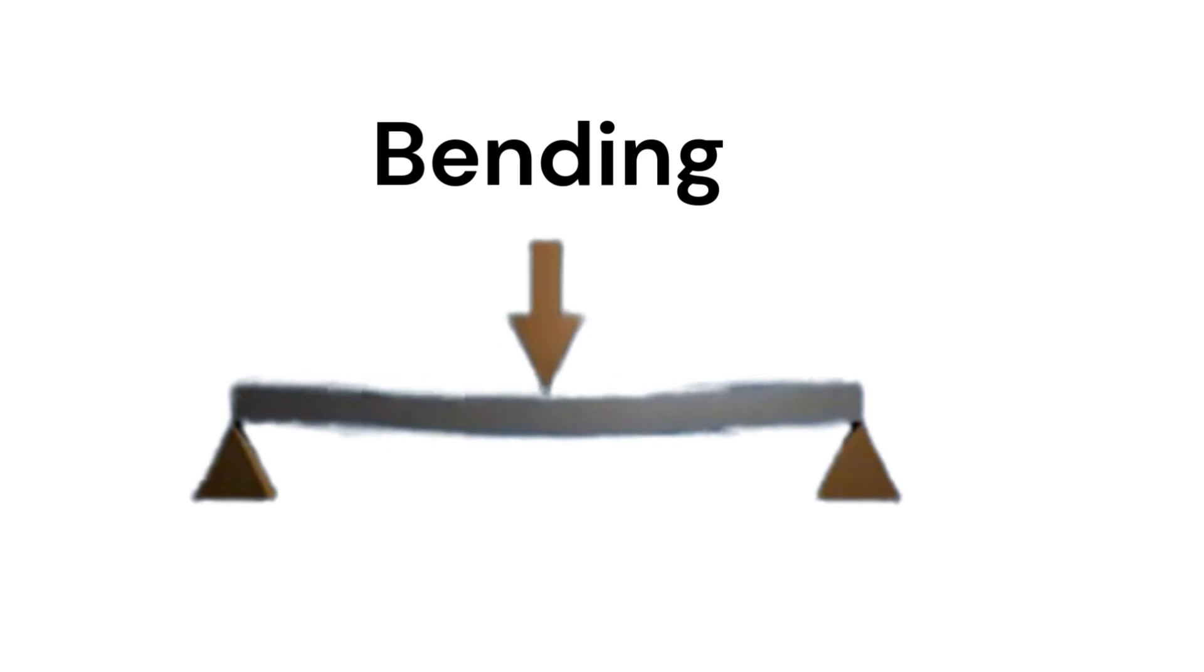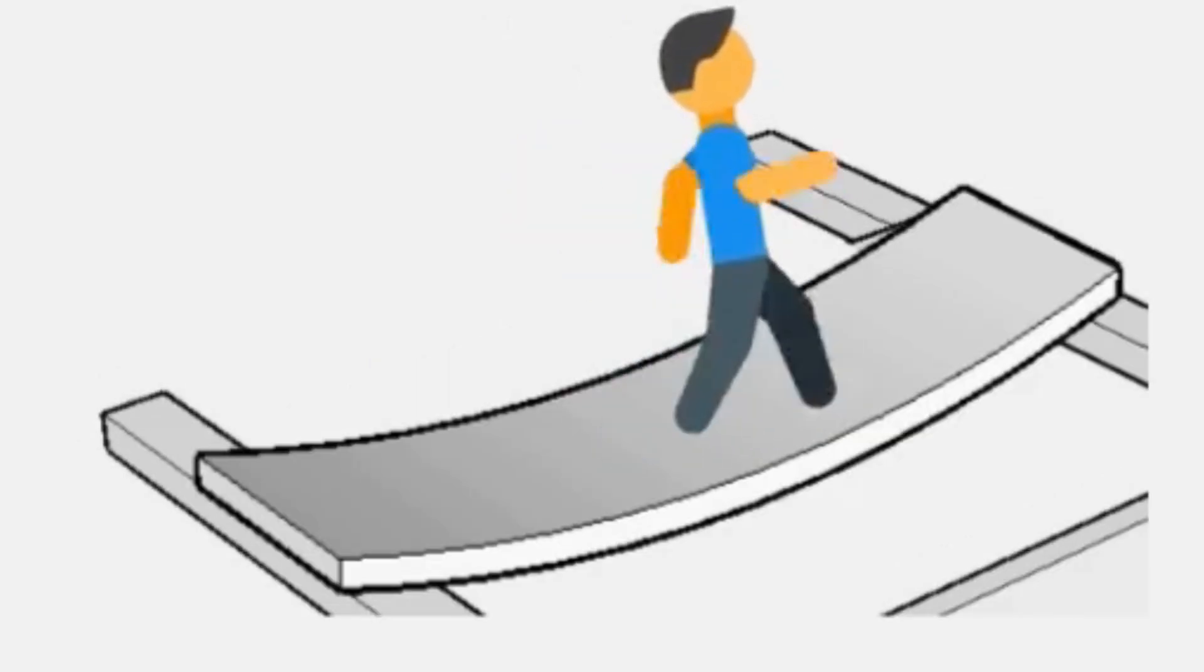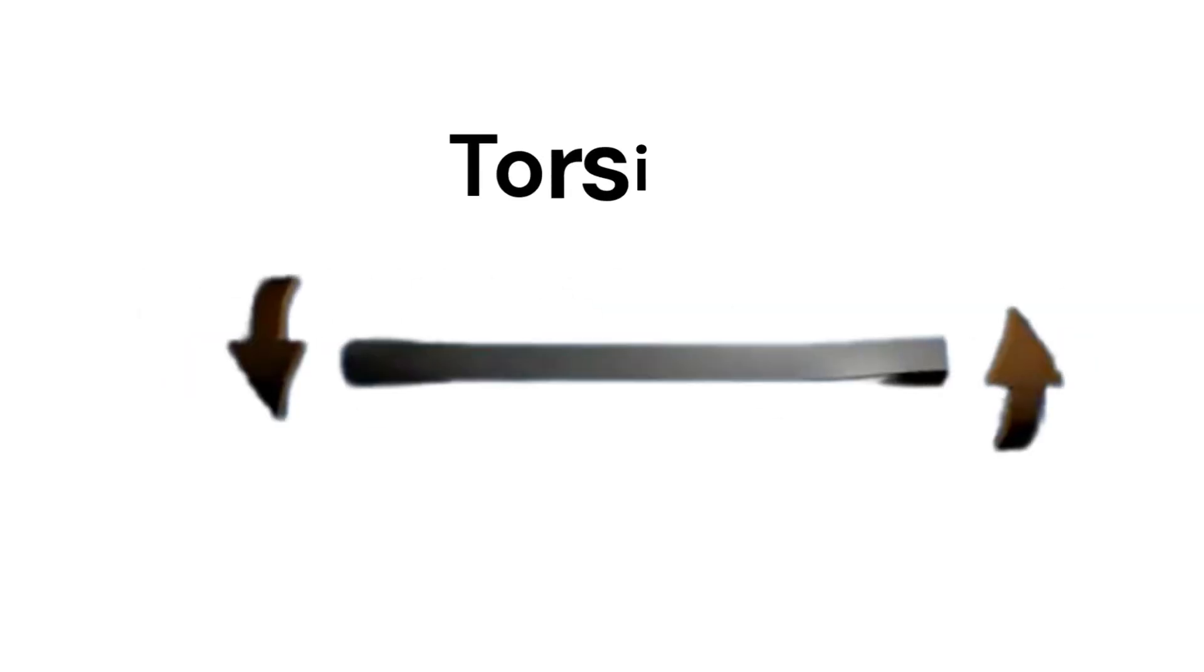Now let's move to bending. Bending occurs when the applied forces cause the beam to curve. Think of a wooden plank when someone sits on it, it bends under the load.